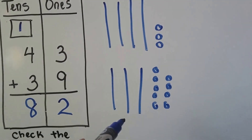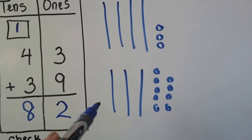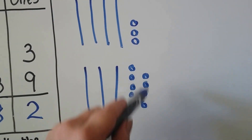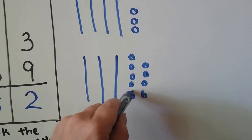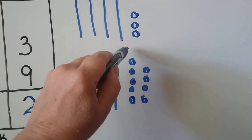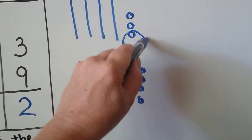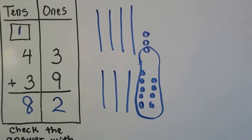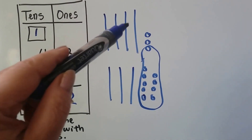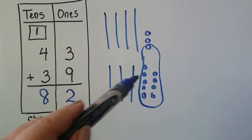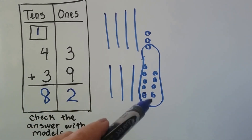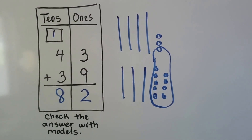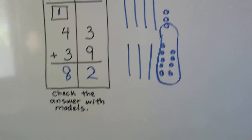We can group these together to make another 10. And if there's 9 here — we got 9 little circles here — we can group this one with these 9 and make another 10. Now we have 1, 2, 3, 4, 5, 6, 7, 8 tens and 2 ones. Yeah, we did it right.